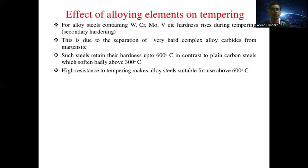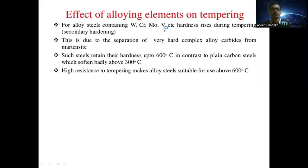The effect of alloying elements on tempering: for alloy steels containing tungsten, chromium, and molybdenum, hardness rises during tempering — this is called secondary hardening. These elements increase the hardness of alloy steel due to the separation of very hard complex alloy carbide from martensite. Such steel retains its hardness up to 600°C, in contrast to plain carbon steel which softens badly above 300°C.